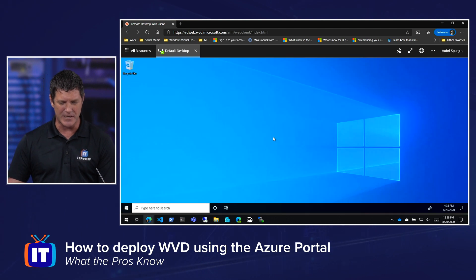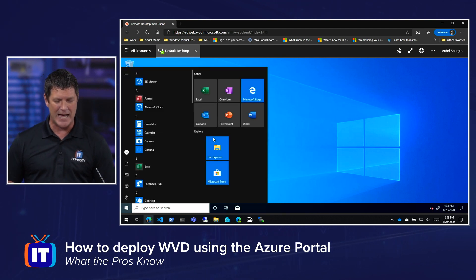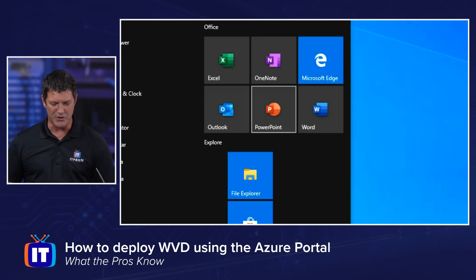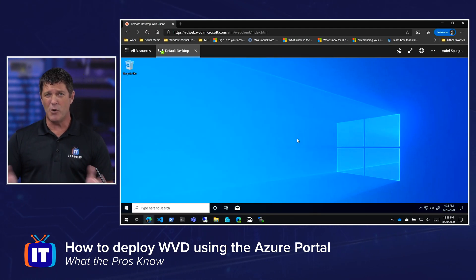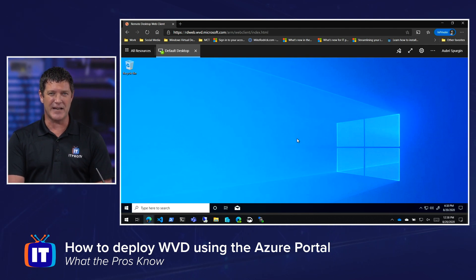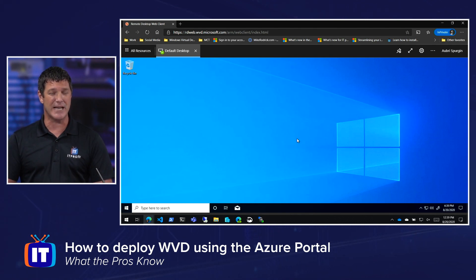There we go — we can see I am in Windows 10. I chose an image that included the Microsoft 365 apps. This is my first logon, so just like logging onto a machine for the first time, the Windows 10 start menu had to be built. But look — there's Excel, there's Word. All within about 15 minutes we were able to deploy a fully functional Windows Virtual Desktop environment. Granted, this is a simple proof of concept — we still want to set up multi-factor authentication, FSLogix profiles, and address other security and performance considerations.